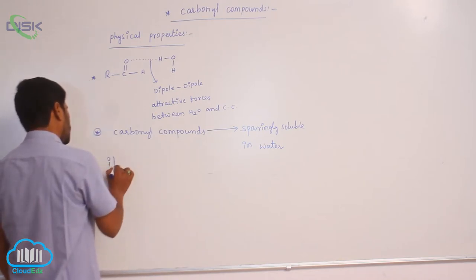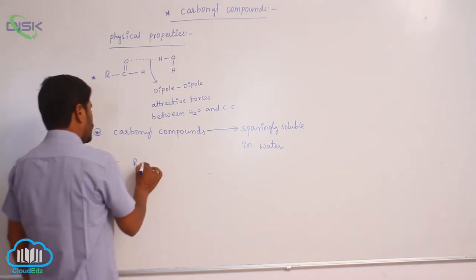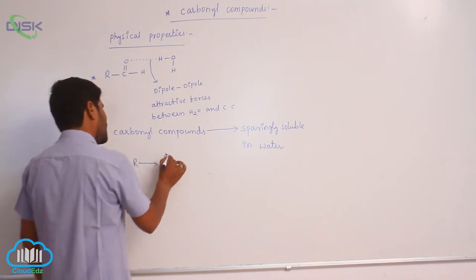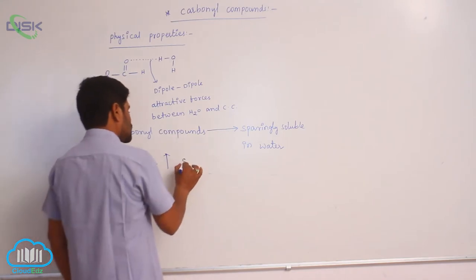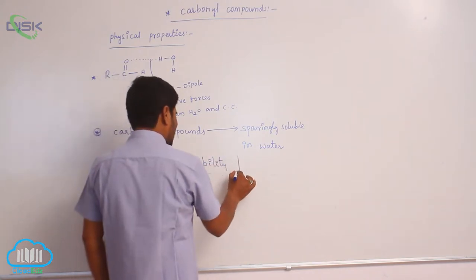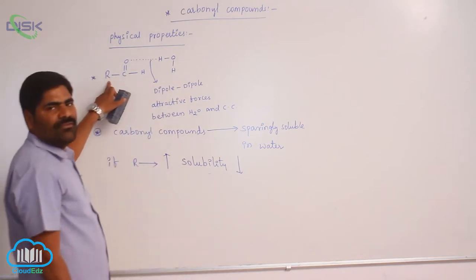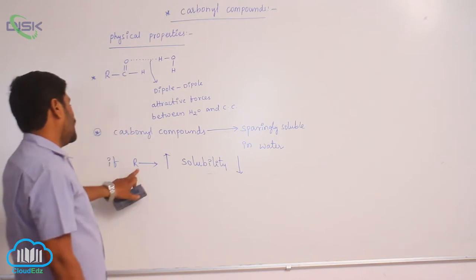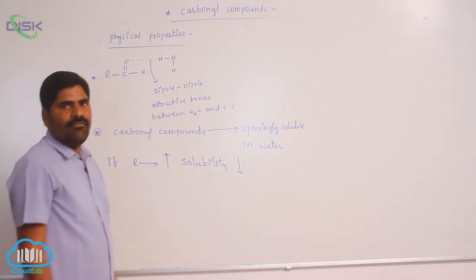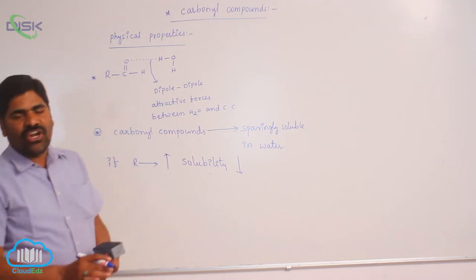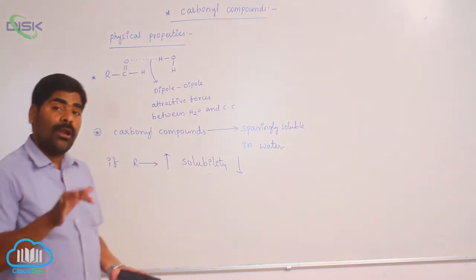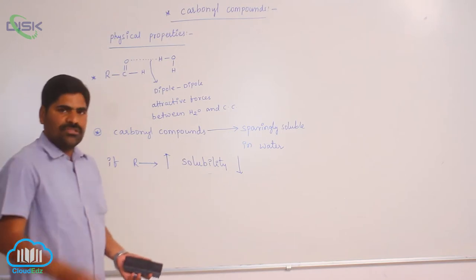If the R group increases — meaning the number of alkyl groups increases — solubility decreases. When the number of carbon atoms increases, the hydrophobic part increases. When the hydrophobic part increases, these are easily repelled by water, so there is no attractive force between water molecules and the carbonyl compound. That is why solubility decreases.